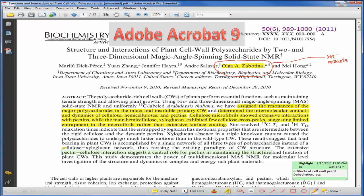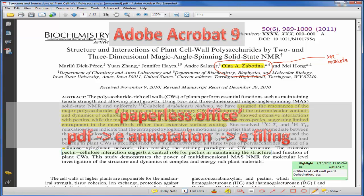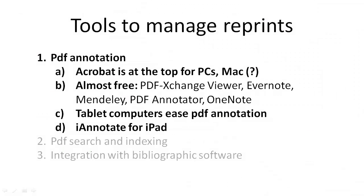For PDF annotation, the tool of choice — probably the king tool — is Adobe Acrobat. It costs some money but it's quite powerful. It allows you to write on the electronic version of the article, highlight text, and put notations inside those texts or on the document itself. It's probably the most powerful of all the programs intended for annotation of PDF files. Years ago people talked about a paperless office; that really hasn't come to play, but we're moving slowly in that direction.